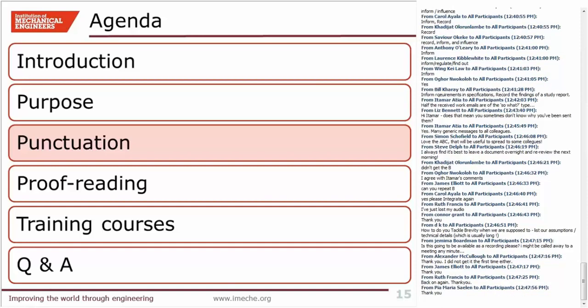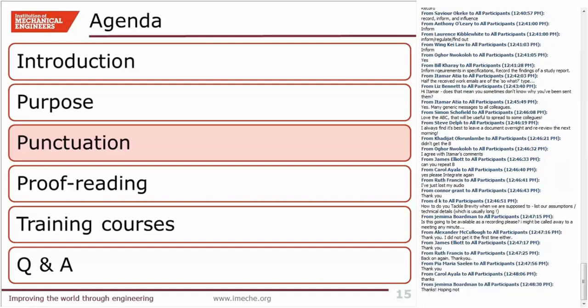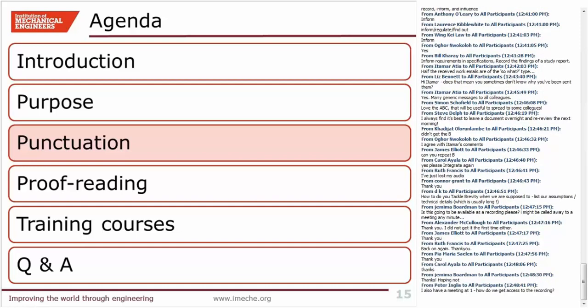Jean, can I just interrupt? I think we might be going to lose Jemima, who's asking in the chat box if there's going to be a recording of this because she's going to get called away into a meeting. Yes, it's been recorded, so no worries. Before we move on, there's a question from DK related to purpose: how do you tackle brevity when we are supposed to list assumptions and technical details, which is usually long? How can you have brevity in those situations?